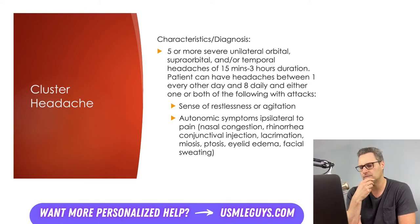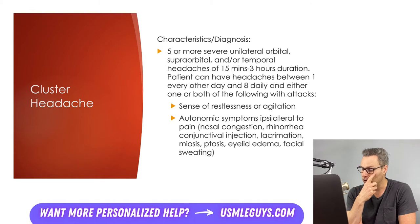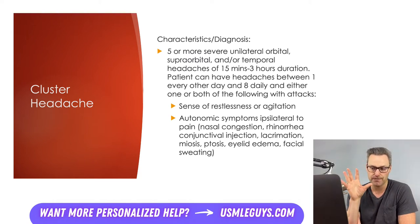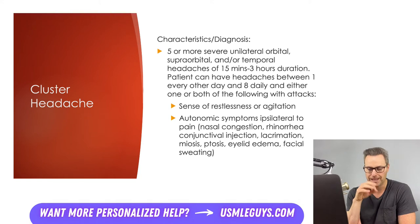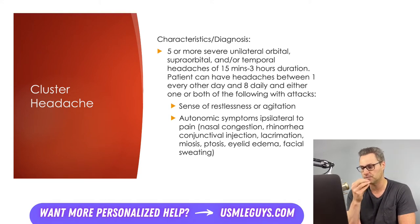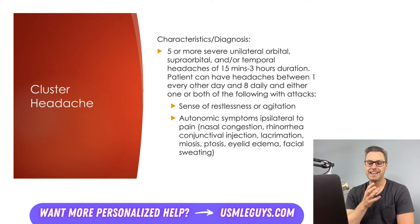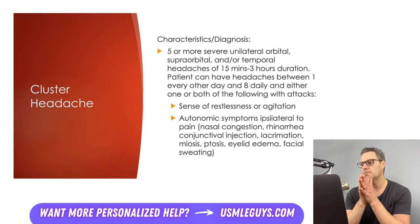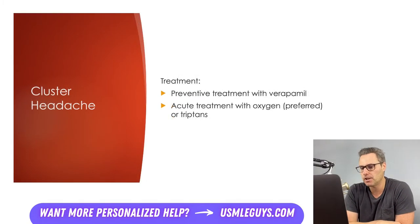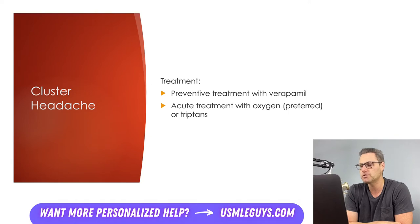The autonomic symptoms include lacrimation, nasal symptoms like congestion or rhinorrhea, eye symptoms such as conjunctival injection, ptosis, and eyelid edema, as well as facial sweating. The patient needs at least five episodes before we make a diagnosis. No imaging or labs are required — just like with migraine or tension headache. However, if you see focal neurologic deficits or signs suggesting a space-occupying lesion, imaging is mandatory. Preventative treatment includes daily verapamil, and for acute pain management, oxygen is the preferred modality. If O2 alone fails, a triptan medication can be added.